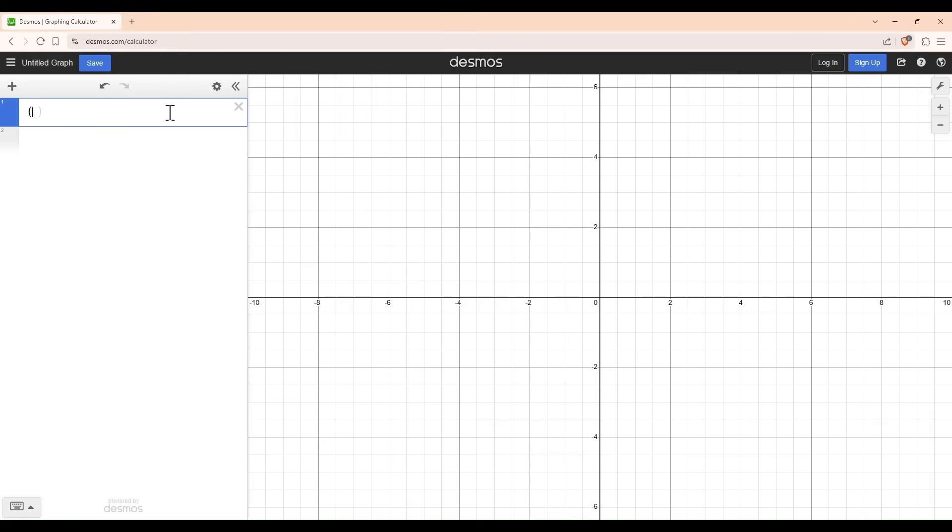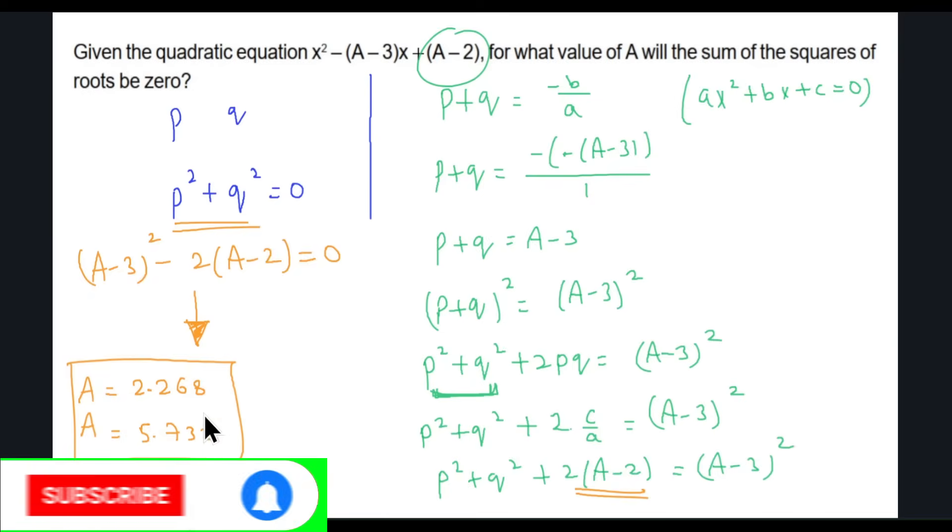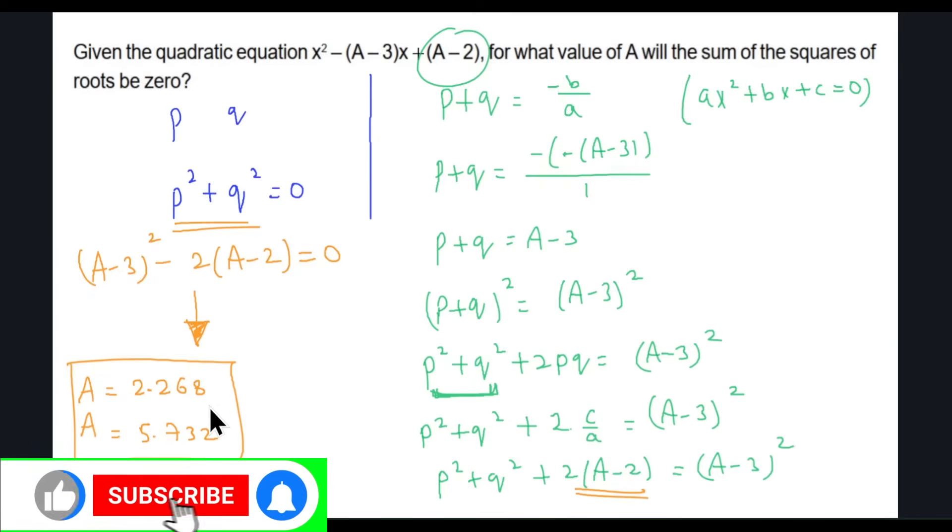All we have to do now is put that in Desmos, obviously replace A with X, and get the value of A. So it's X minus 3 whole square minus 2 times X minus 2. There are actually two answers up to three decimal places: 2.268 and 5.732. So we have two answers. If this is a student response question, you can fill either of it. Both are correct.